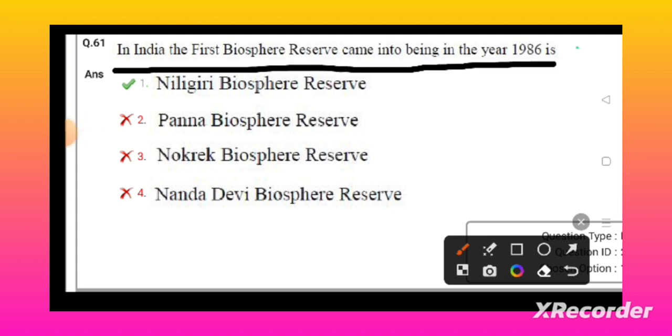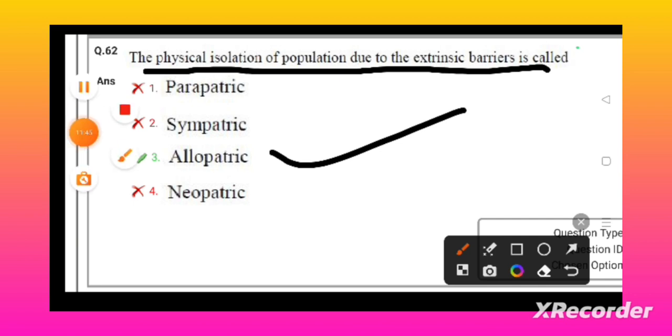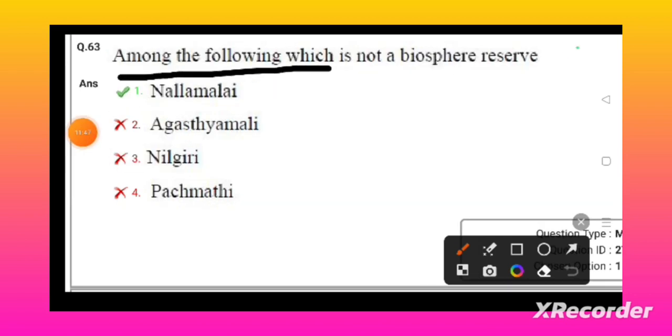The physical isolation of the population due to the extrinsic barrier is called allopatric speciation. Among the following, which is not a biosphere reserve? Nallamala is not a biosphere reserve. Agasthyamala is a biosphere reserve, Nilgiri Biosphere Reserve, and Panchmarhi Biosphere Reserve.